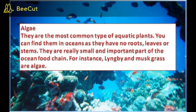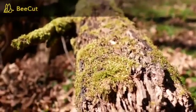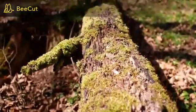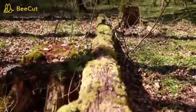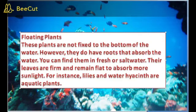Limbambi and musk grass are elongated. Limbambi and musk grass are not fixed to the bottom of the water. However, they do have roots that absorb water. You can find them in freshwater. Their leaves are fringed to absorb more sunlight.